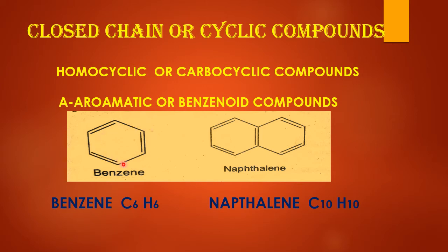The formula of benzene is C6H10, while naphthalene is made by two benzene rings and its formula is C10H10. Both benzene and naphthalene contain a specific aroma or smell, which is why they are called aromatic or benzenoid compounds.